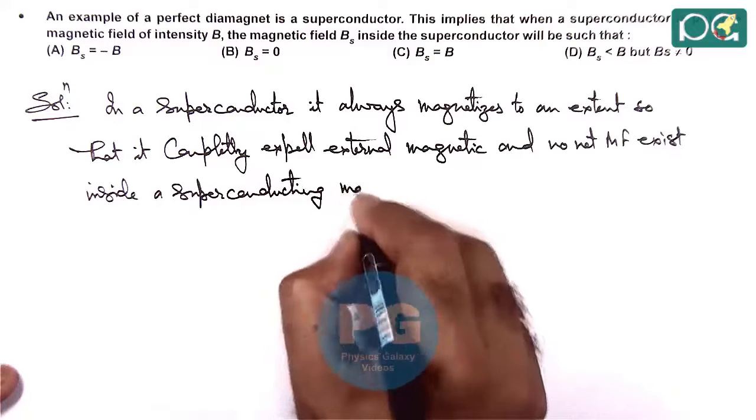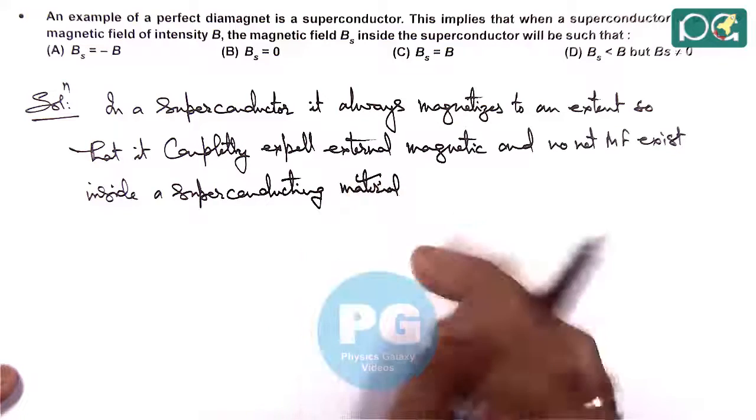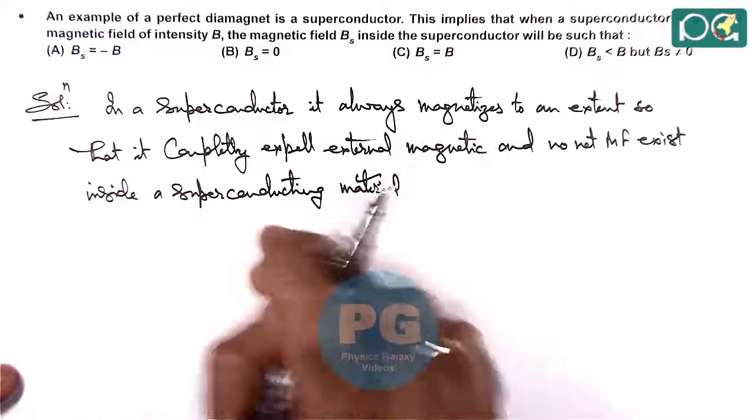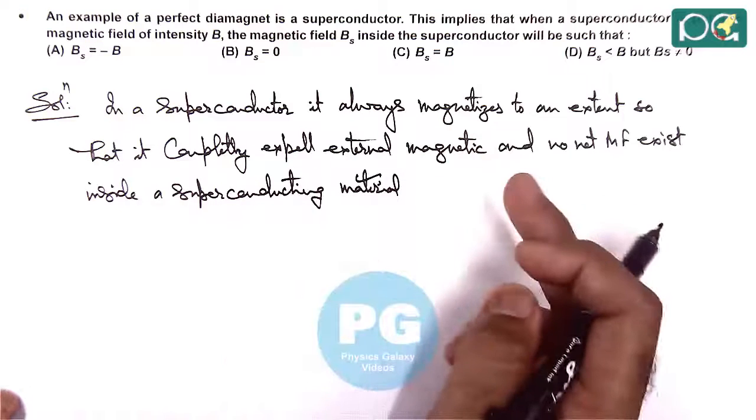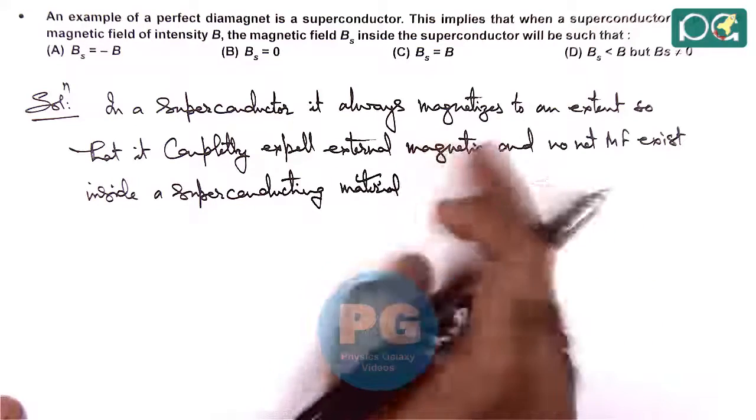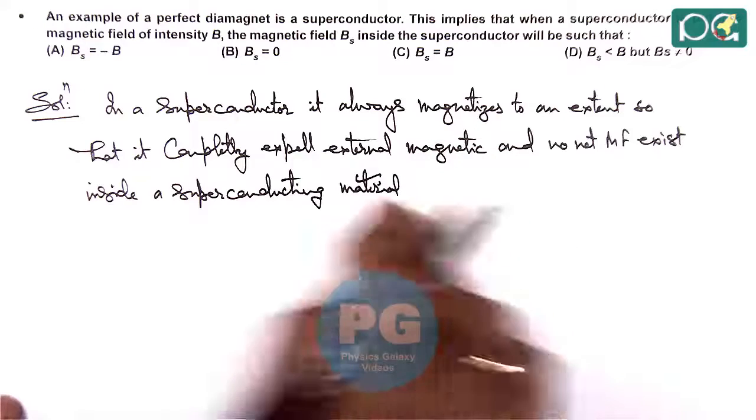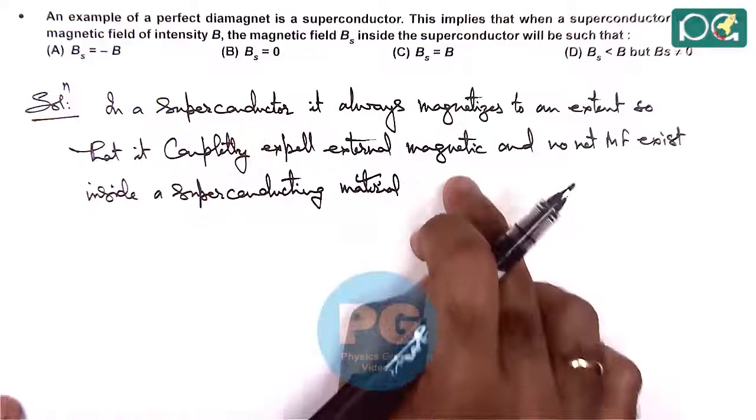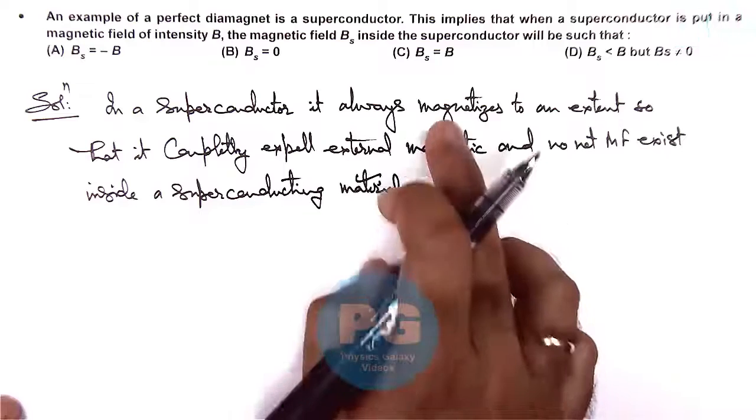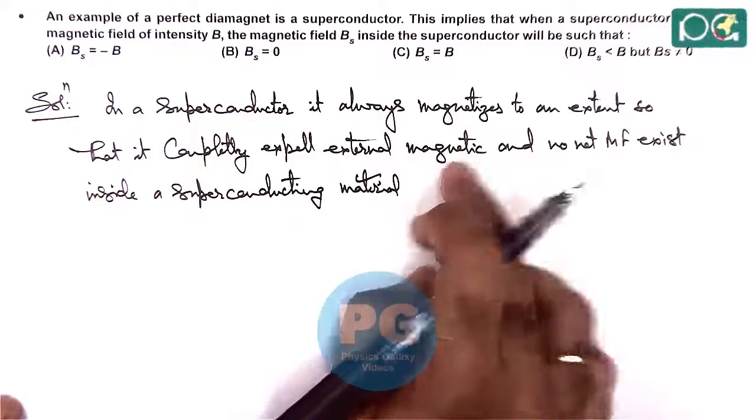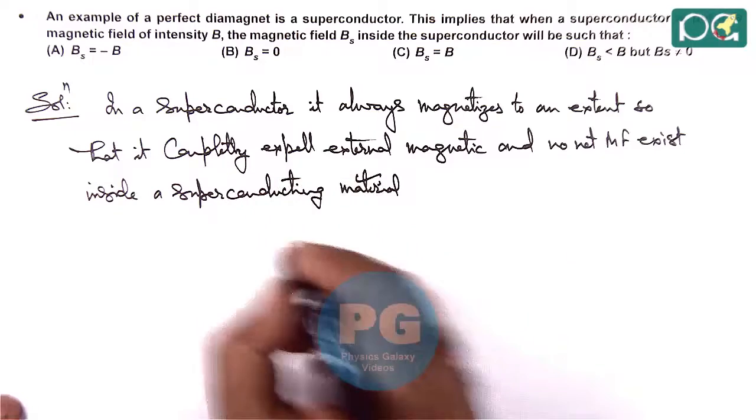That we already discussed as it is behaving like a perfect diamagnet, then the opposition or the opposite magnetizing field produced by the superconductor, due to magnetization by external field, is always equal to the external magnetic field, so it completely expels the external magnetic field.